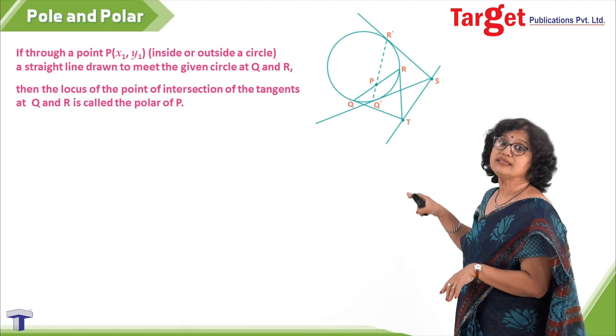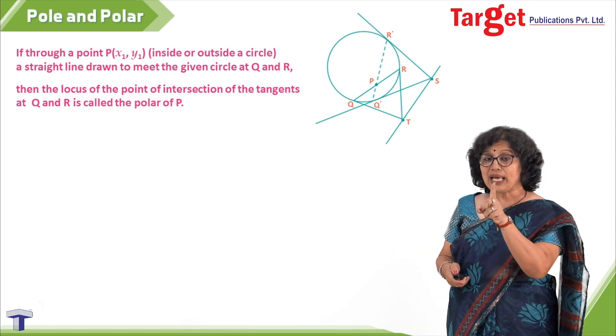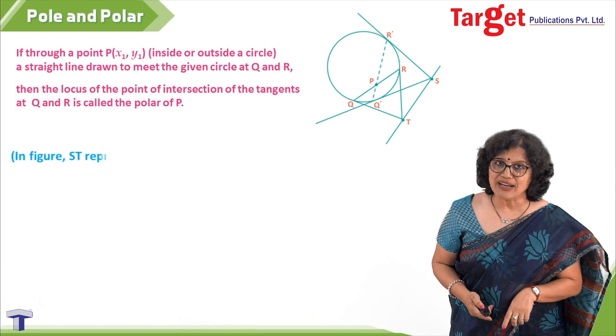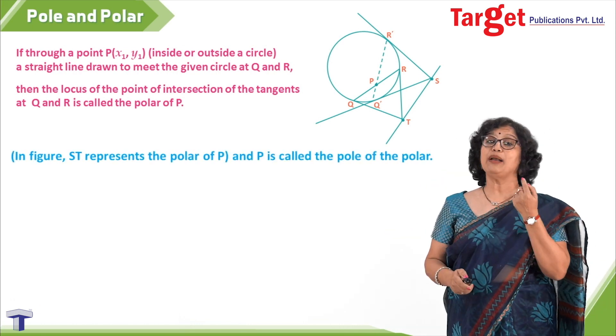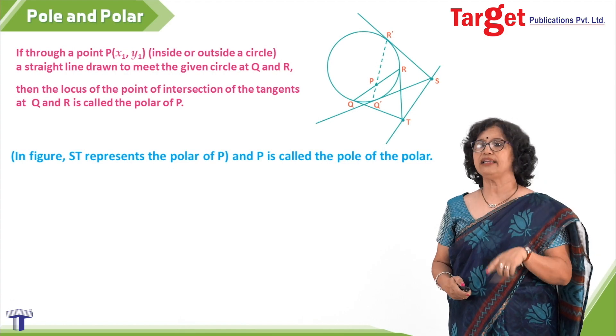So polar here is ST and pole is point P. Understand one thing: in the picture, ST is the polar and point P is the pole. Don't forget that.